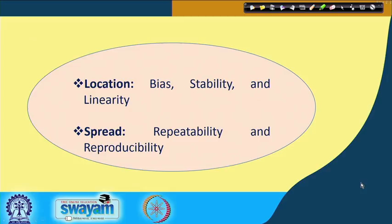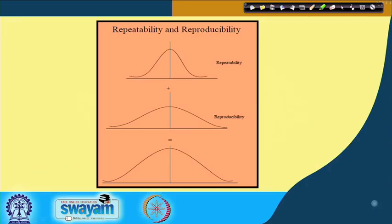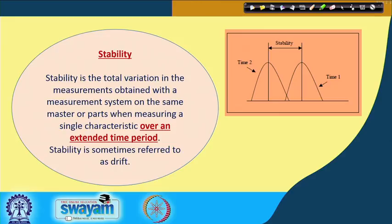There are broadly two issues: location and spread. When talking about location, bias, stability, and linearity are three important issues. When talking about spread, repeatability and reproducibility are the important issues. First, I would like to check for location — bias, stability, and linearity. Once this is done, my interest lies in checking the spread through Gauge R and R study. When repeatability and reproducibility are combined, they give a wider spread of the measurement system, which is undesirable.